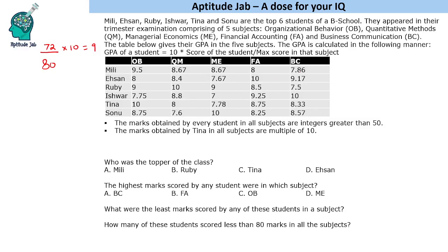Using this information we need to determine the actual marks. First, let's look at OB. The maximum GPA is 10, so the topper has a GPA of 10. Looking at the decimal points — 0.75, 0.75 — these translate to something over 4, meaning the total marks are a multiple of 4. If we assume the maximum is 40, then 7.75 × 4 = 31, which is less than 50.